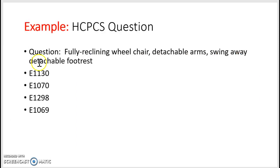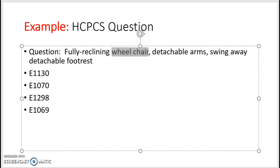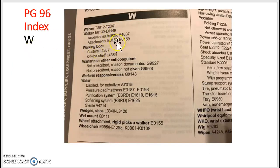Let's do an example — this is similar to what you're doing in your assignment, so it will help you understand how to find the code. The question says: 'fully reclining wheelchair, detachable arms, swing-away detachable footrest.' We're not going to focus on the answer choices. What do you think is the main term here? We're looking for a medical supply — and that would be 'wheelchair.'